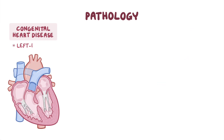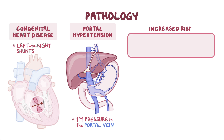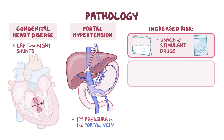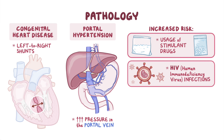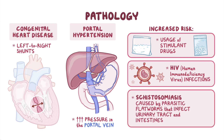Other causes of PAH include congenital heart disease with left-to-right shunts and portal hypertension, characterized by increased pressure in the portal vein that leads blood from the digestive tract to the liver. The risk of PAH also increases with the usage of some stimulant drugs like cocaine and amphetamines, HIV or human immunodeficiency virus infections, and schistosomiasis, which is caused by parasitic flatworms called schistosomes that infect the urinary tract or intestines.